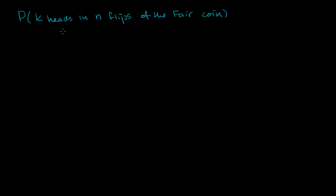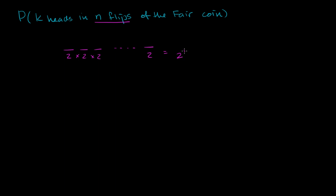The first thing to think about is just how many possibilities there are when there are n flips — first flip, second flip, third flip, all the way to the nth flip. This is a fair coin, so each flip has two equally likely possibilities. The total number of possibilities is going to be 2 times 2 times 2, n times, which equals 2 to the nth possibilities.